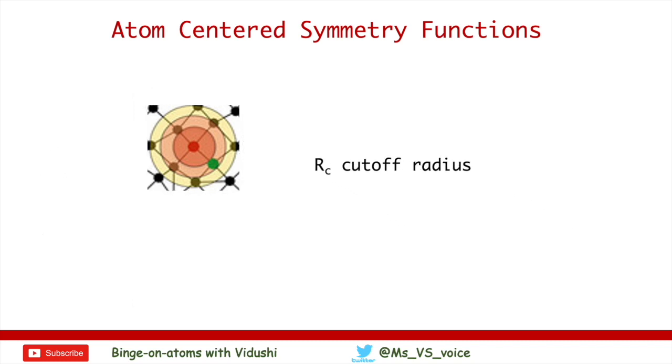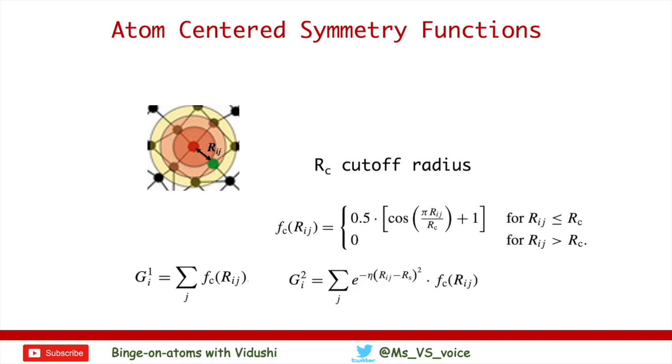First, for every neighboring atom in the cutoff radius, a cutoff function is defined. Here, Rij is the distance between two atoms. Radial functions are constructed as the sum of two body terms. Now you can have sum of cutoff functions as a radial function G1, but another radial function G2 is used in most studies, which is Gaussians multiplied with cutoff function. Here, eta defines the width of Gaussian and RS is the shift in the center of Gaussians that you would like. Usually, RS is kept zero so that the center of Gaussian is maintained at the reference atom.